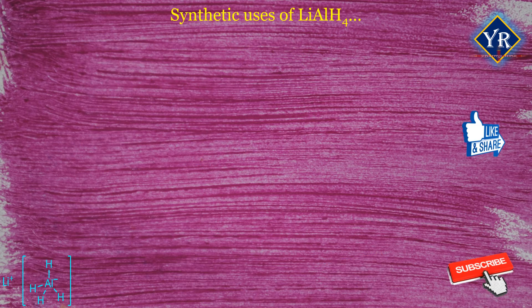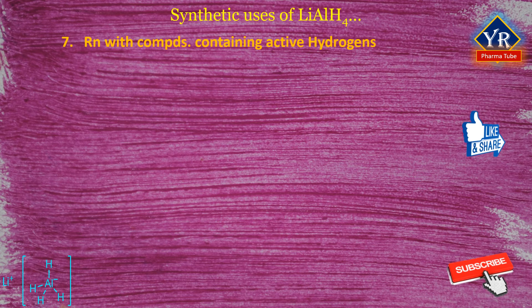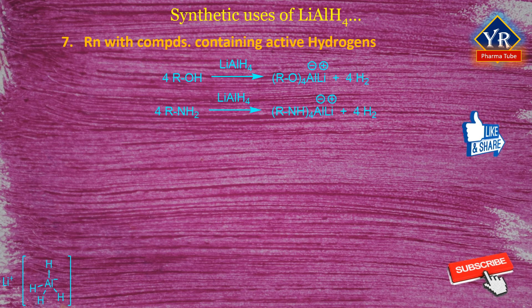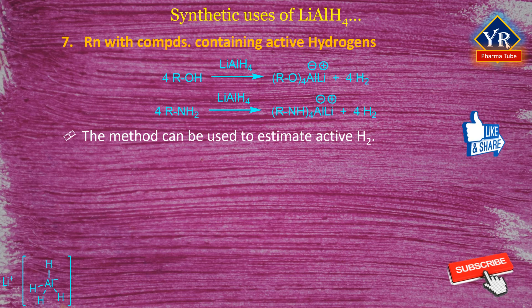Number 7: Reaction with compounds containing active hydrogens. The reagent lithium aluminium hydride reacts with alcohols and amines to evolve hydrogen. This method can be used to estimate active hydrogen.